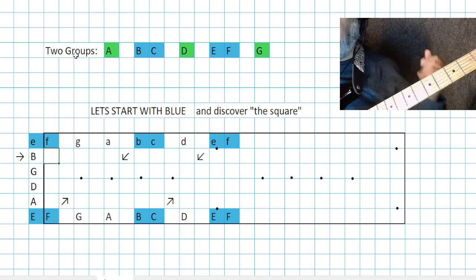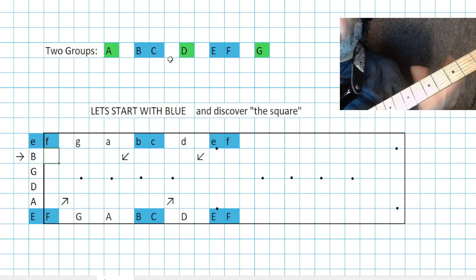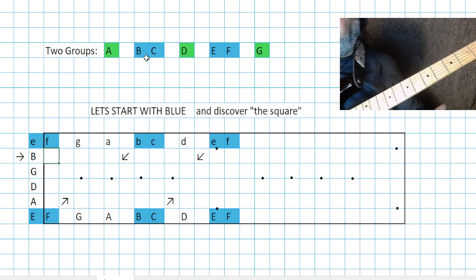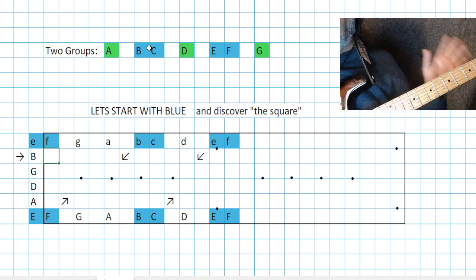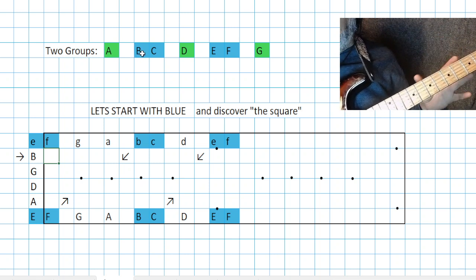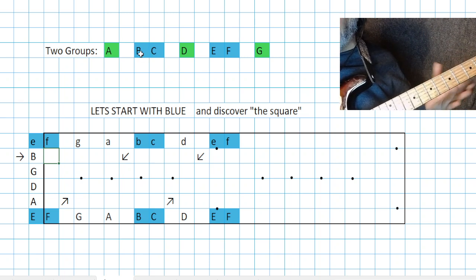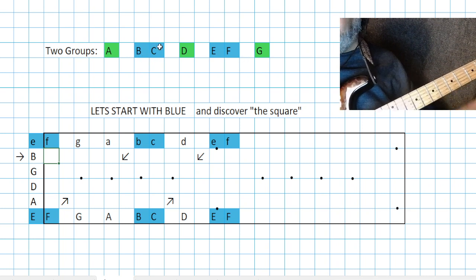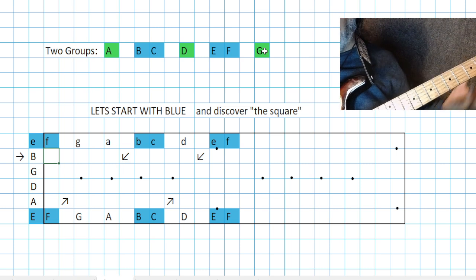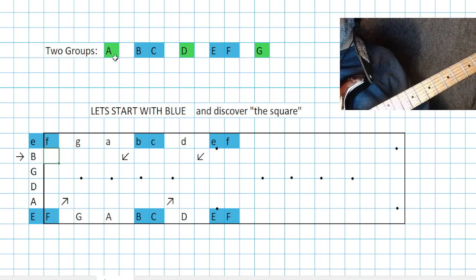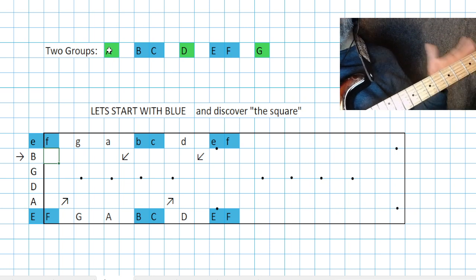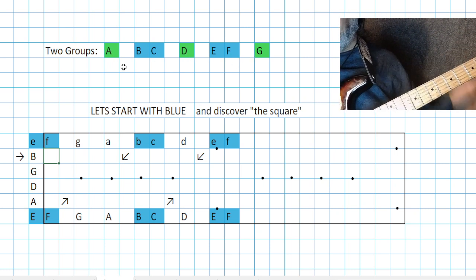We can separate this into two groups: A, D, and G — and B, C, E, F — highlighted with two different colors. What is the logic behind these two groupings? The blue group contains the half steps in the major scale — there are two half steps, hence two blue groups. And then there are these three single notes that don't have a sharp or flat on either side of them. That's our green group — we'll call that ADG.